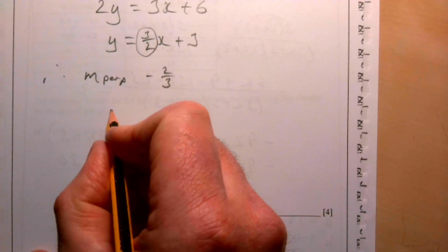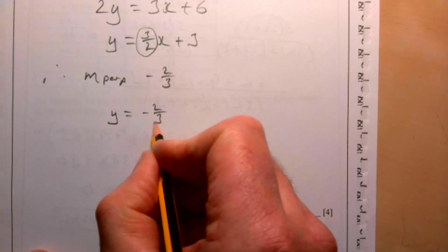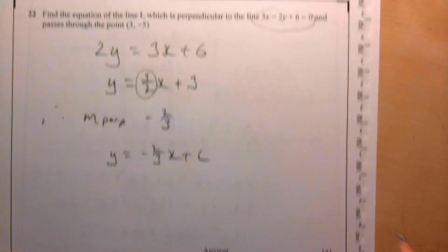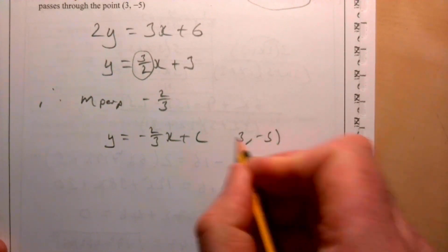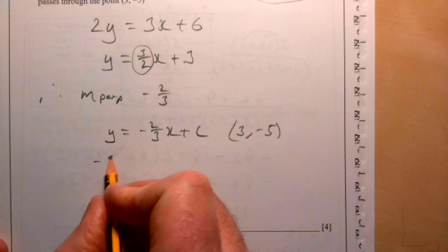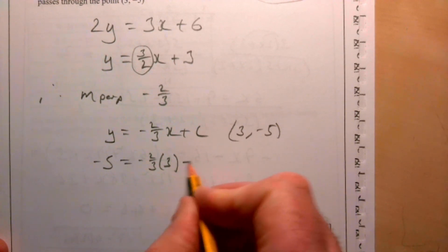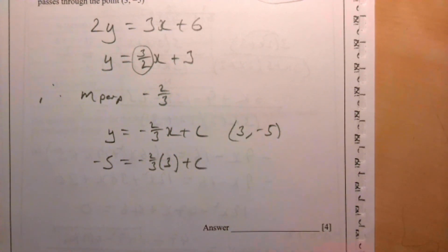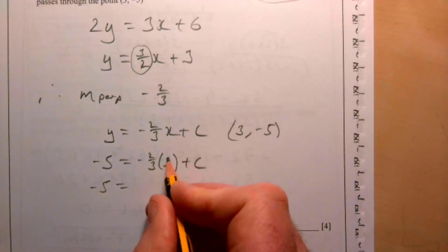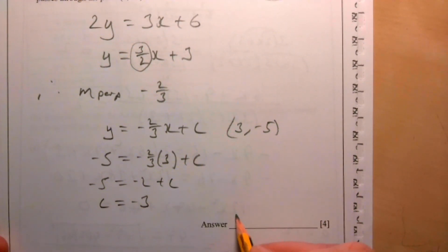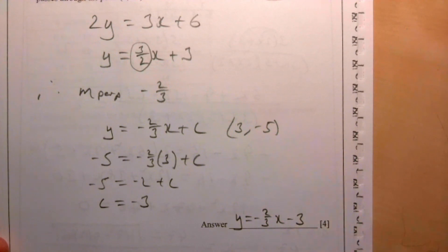The equation is y equals minus two-thirds x plus c. Substituting the point (3, minus 5): minus 5 equals minus two-thirds times 3 plus c, giving minus 5 equals minus 2 plus c, so c equals minus 3. The equation of the perpendicular line is y equals minus two-thirds x minus 3.